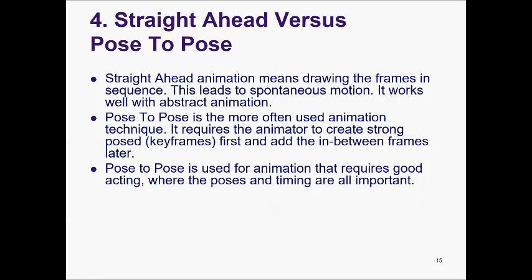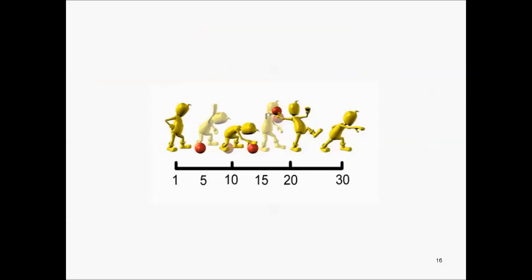Principle number four is straight ahead versus pose to pose. Straight ahead animation means drawing frames in sequence, leading to spontaneous motion that works well with abstract animation. Pose to pose is the more commonly used technique — the animator creates strong key frames first and adds in-between frames. Pose to pose is useful for animation requiring good acting where poses and timing are important.